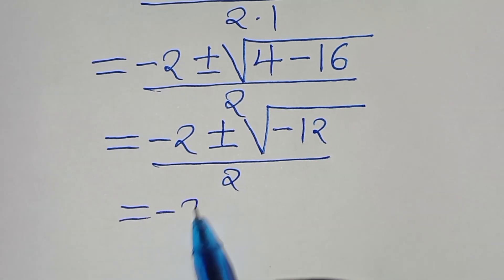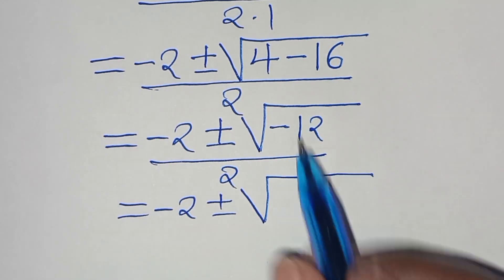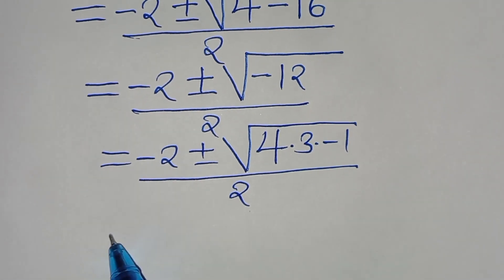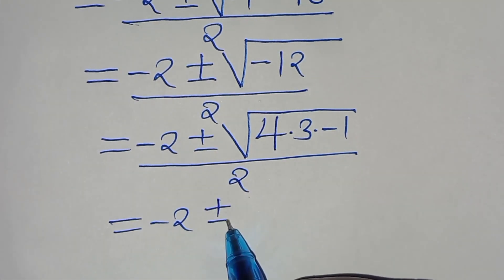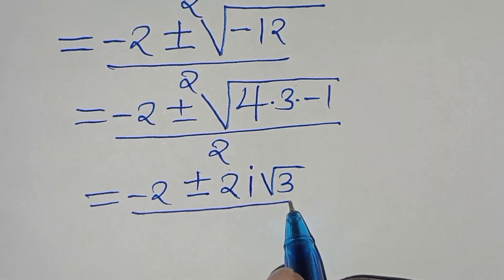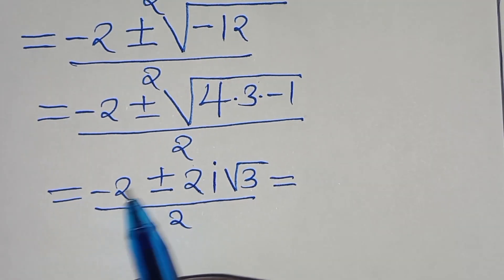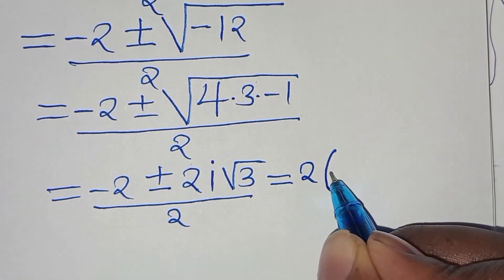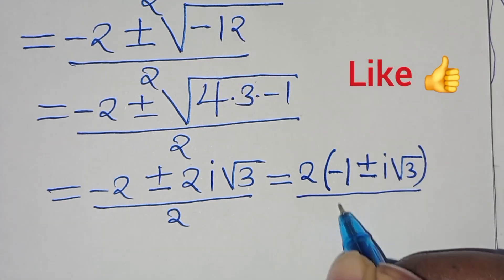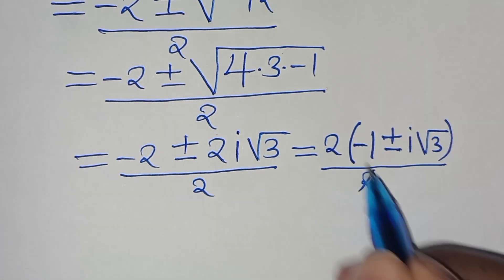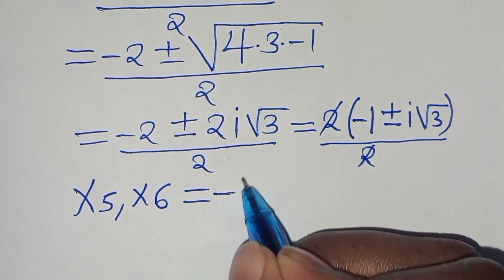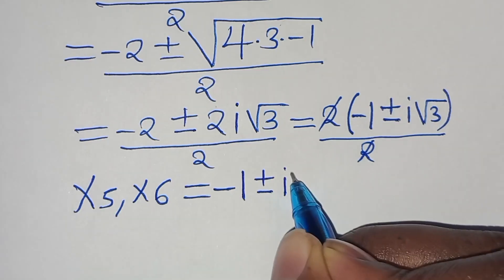So we have minus 2 plus or minus the square root of 4 minus 16, which is minus 12, over 2. We can express square root of minus 12 as the square root of 4 times 3 times minus 1, giving 2i√3. Factoring out 2 from the numerator, x₅ and x₆ equal minus 1 plus or minus i√3 — two more complex solutions for case 2.